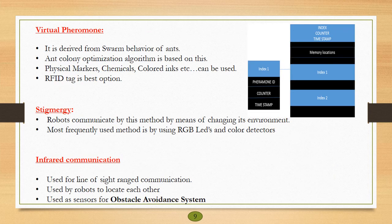Virtual pheromone: this concept is actually derived from the swarm behavior of ants. For the practical implementation of virtual pheromone concept, we can use physical markers, chemicals, colored inks, etc. However, these methods are not so effective, so we use RFID tagging. These RFID tags consist of memory spaces in which robots' IDs can be stored and these informations are frequently sent to a pheromone server and updated in a map. Now let's see an example.